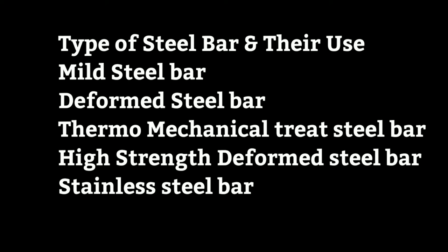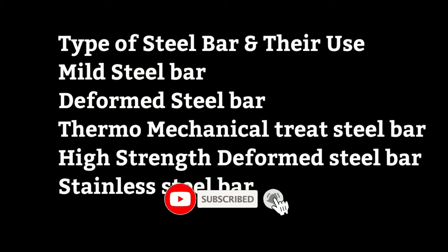The next type is high strength deformed bars, which are provided with lugs, rift projections, or deformations on the surface, and are produced as cold twist deformed bars due to the rift or projection on the surface. The next type is stainless steel bars. These bars also minimize slippage in concrete and increase the bond between the two materials.